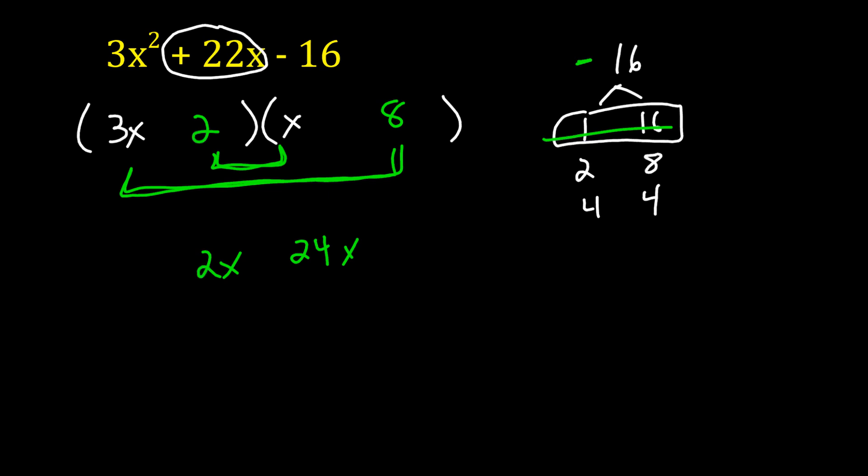Is there a way for me? Remember, this has to be negative 16. So one's got to be positive, one's got to be negative. Is there a way to get positive 22x when we combine these? Sure. If we have plus 24x and minus 2x. So to get the plus 24x, that's going to be 3x times 8. So the 8's got to be positive. And to get negative 2x, that has to be 3x minus 2.